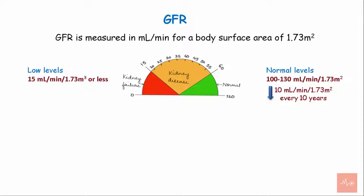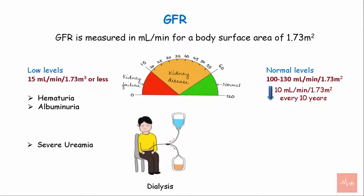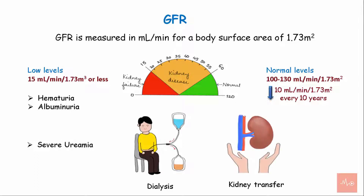GFR can be as low as 15 ml per minute or less, which can lead to hematuria, albuminuria, and severe uremia. Severe uremia may require dialysis or kidney transplant for survival.